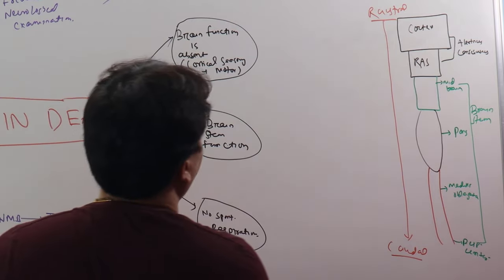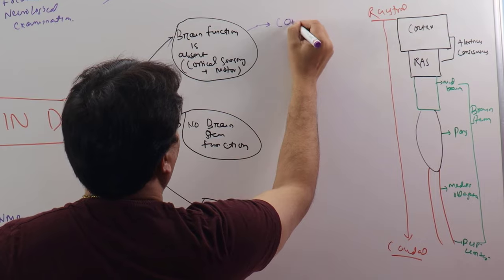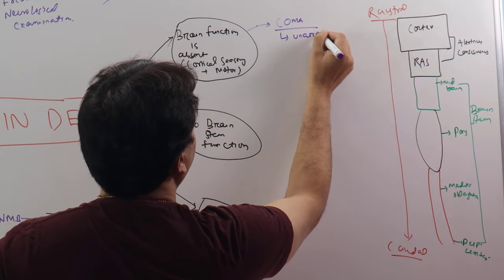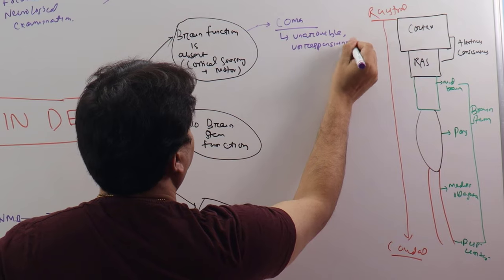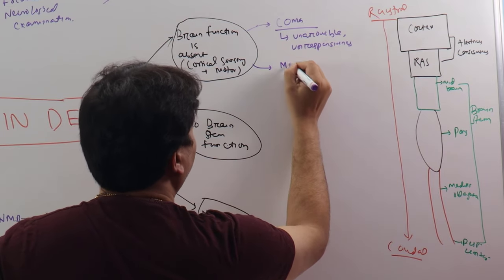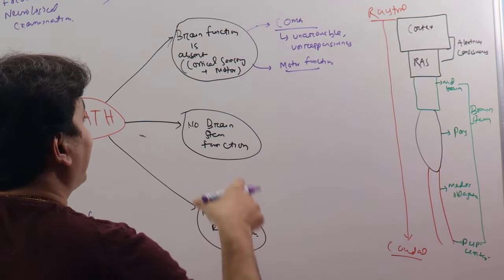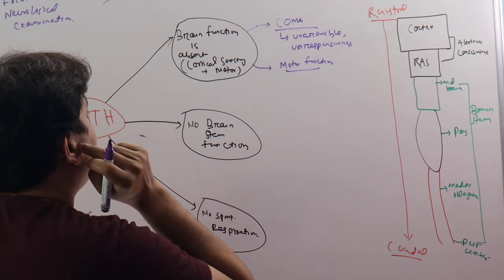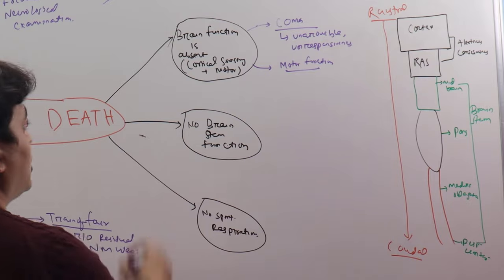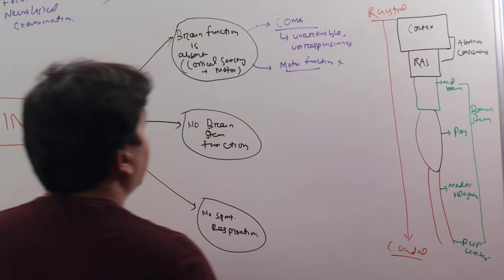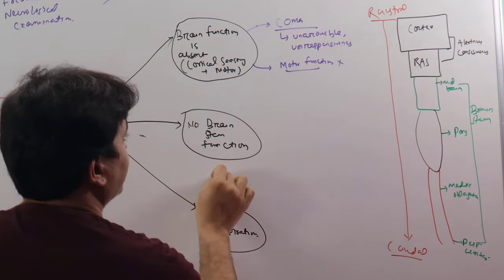For the brain function, if the cortex and reticular activating system are not working, that means the patient is in coma. What do you mean by coma? That is unarousable unresponsiveness. Plus, you have to prove that there is no motor function. How to prove motor function? You press the nail bed or areas of cranial nerve distribution like the supraorbital ridge or the temporomandibular joint. There won't be any response in the limbs or in the body of the patient. Motor function will be absent.